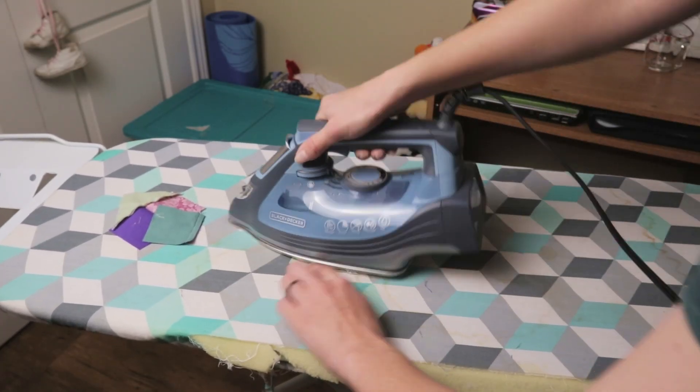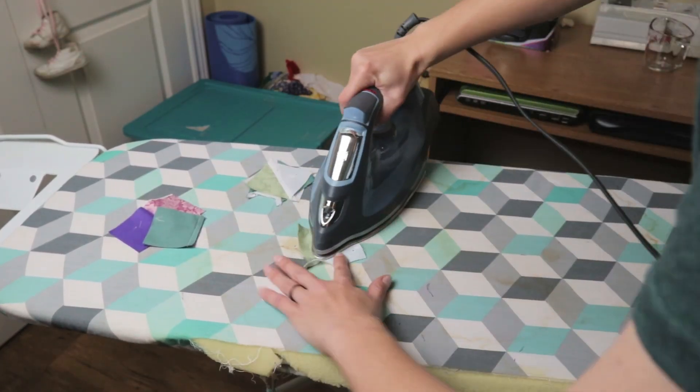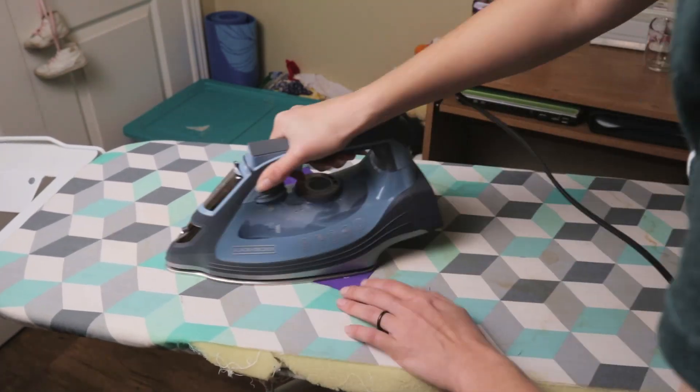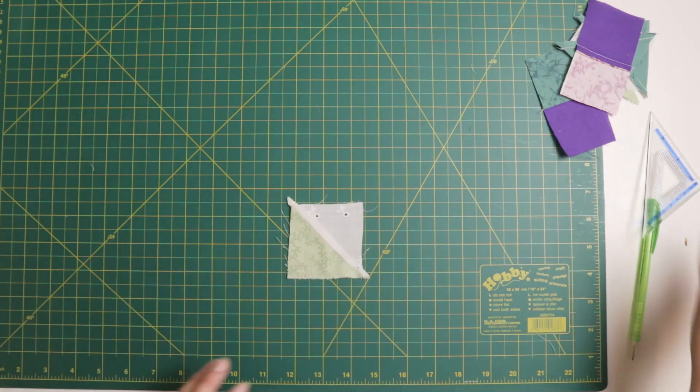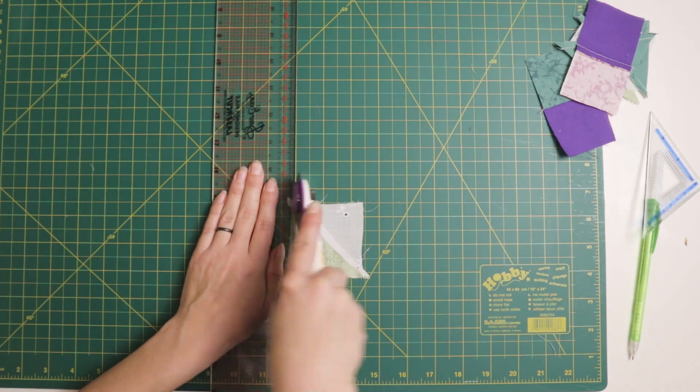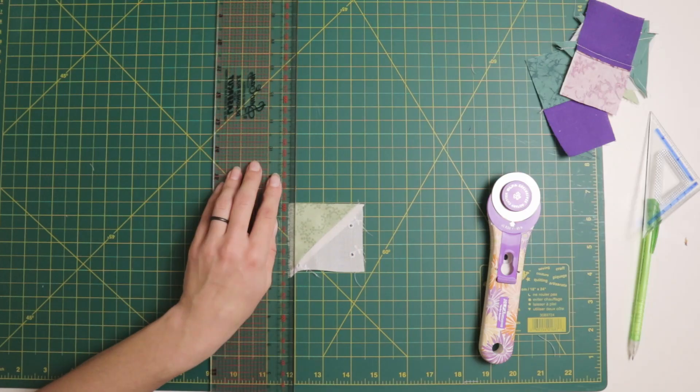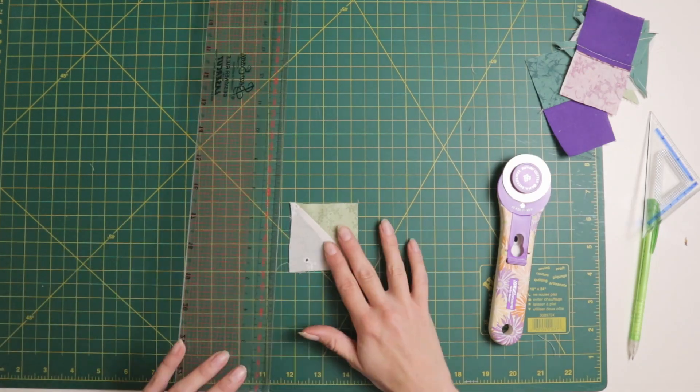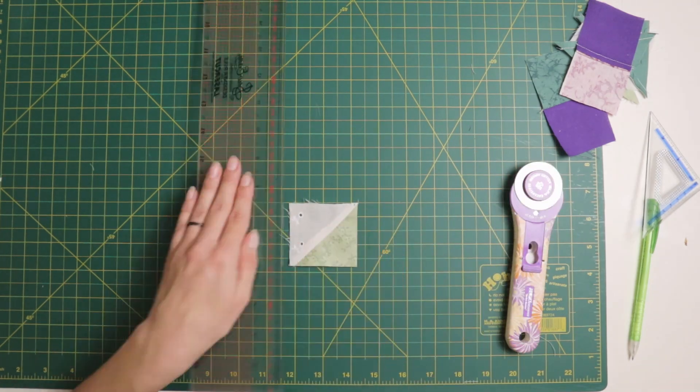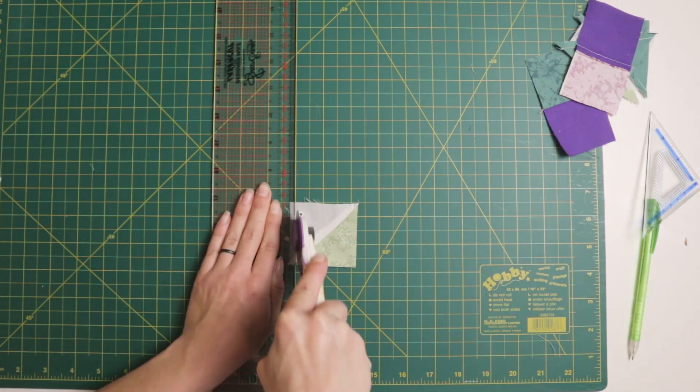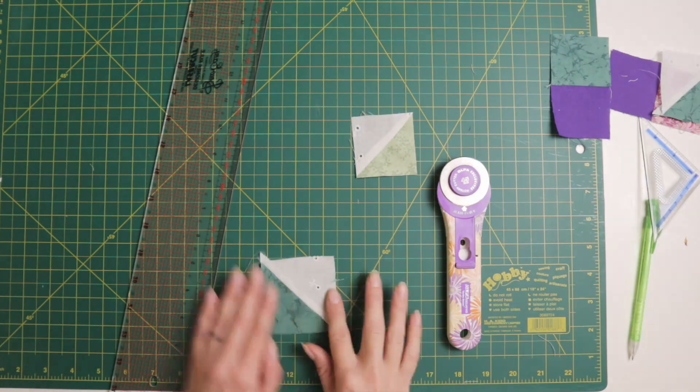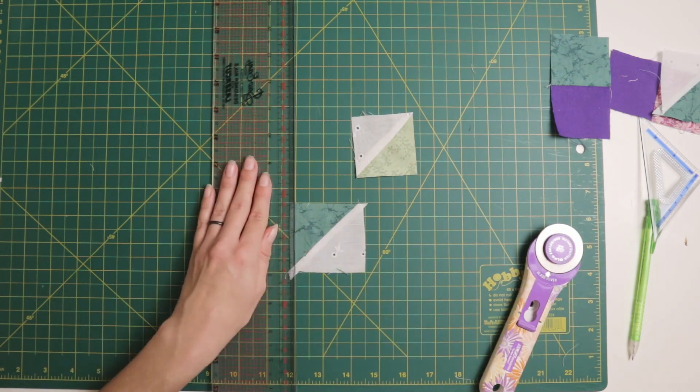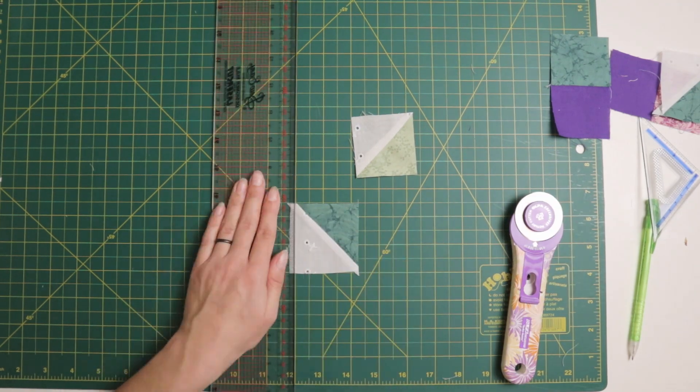Once the pieces were sewn, I gave them a press, pressing the seams on the half square triangles towards the white, and the seams on the smallest squares away from the darker purple. The three inch squares that I cut for the half square triangles do not have to be that big, and you could instead cut yours to two and three quarter inches, but I just prefer making mine a little larger and then trimming them down. So that's what I did next. Once all of my half square triangles were trimmed down to two and a quarter inches, I was able to lay out my entire corner design.